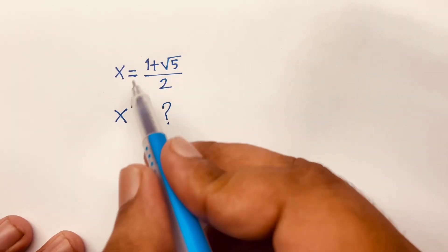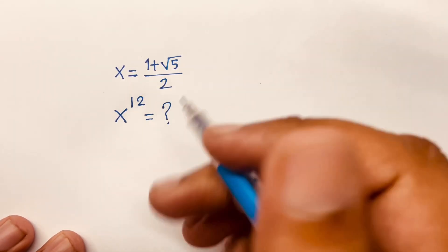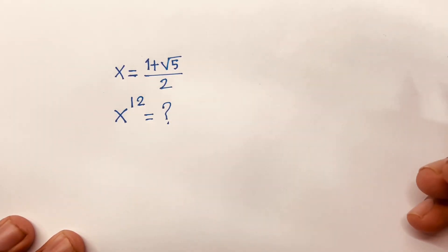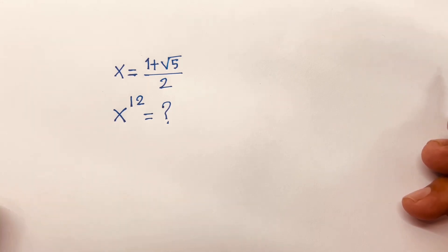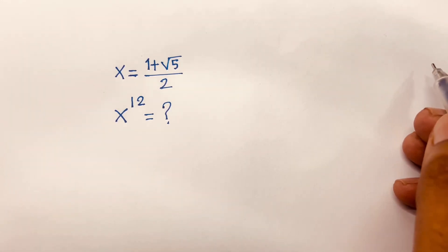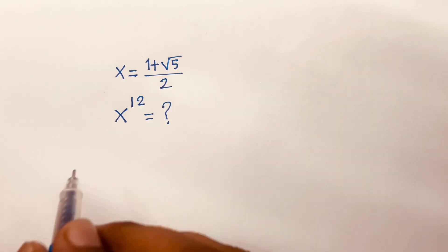Hello everyone. Here x is equal to 1 plus square root 5 over 2. We will find out x to the power 12 is equal to what. So let's start.